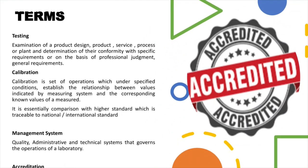The different terms associated with testing, calibration, and management systems: Testing means the examination of product design, product service, product or plant, and determination of conformity with specific requirements. Calibration is a set of operations which, under specified conditions, establishes the relationship between values indicated by a measuring system and the corresponding known values of a measurand. Calibration is performed regularly on equipment to ensure they give repeatable results with no deviation. Accreditation is a process of granting formal recognition and building confidence that the laboratory is performing as per global level standards.